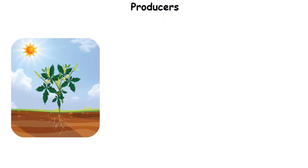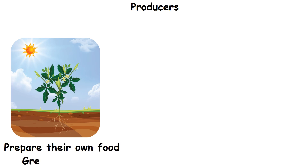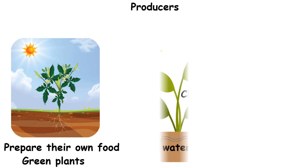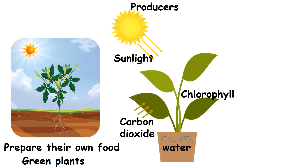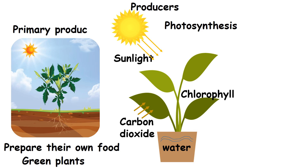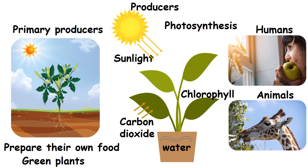The living things that can prepare their own food are called producers. Green plants are the producers. They make their own food by the process of photosynthesis. Hence, they are called primary producers. Humans and animals depend on plants for their food.